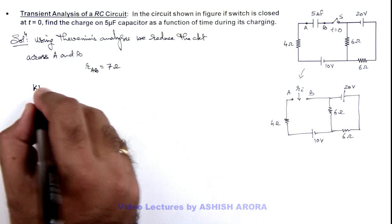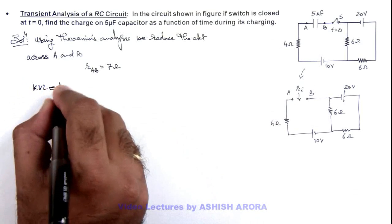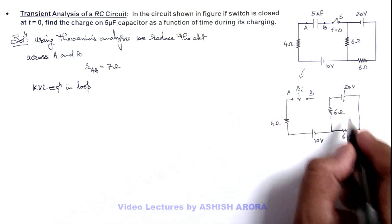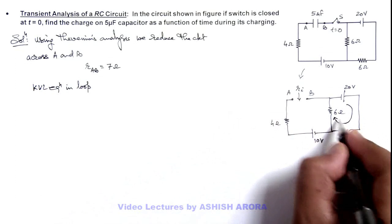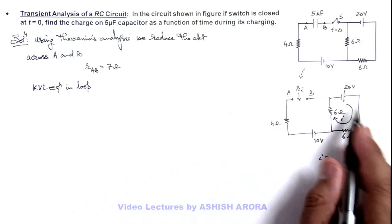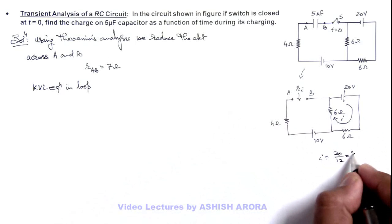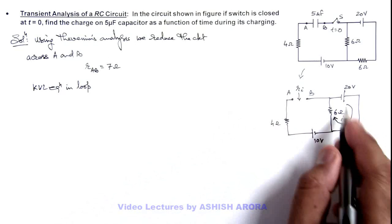And if we write KVL equation in this loop, we can see there is only one current which flows here, and the value of current will be 20 by 12, so this will be 5 by 3 ampere. This is the current flowing in this loop.